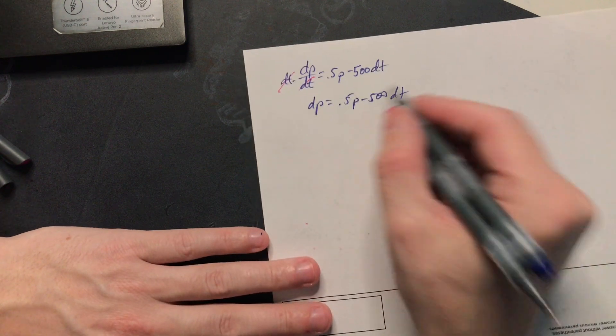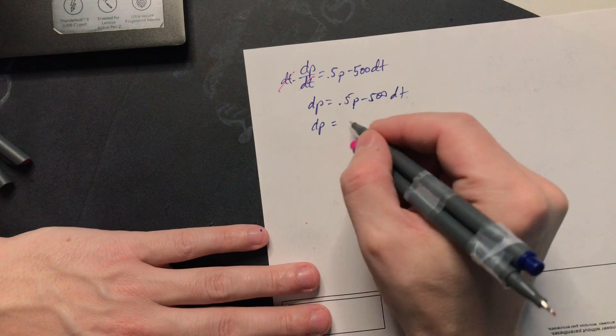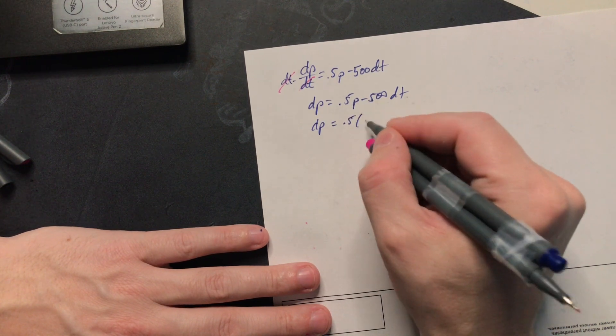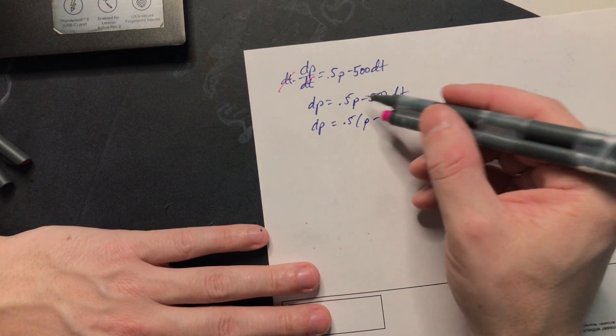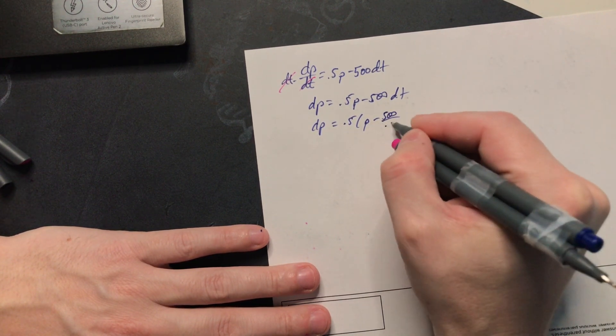Now we would like to simplify this expression a little bit. So what you can do is you can factor 0.5 out. So 0.5 and then p minus. Now when you factor a half out of 500 it's as if you were doing 500 over 0.5.